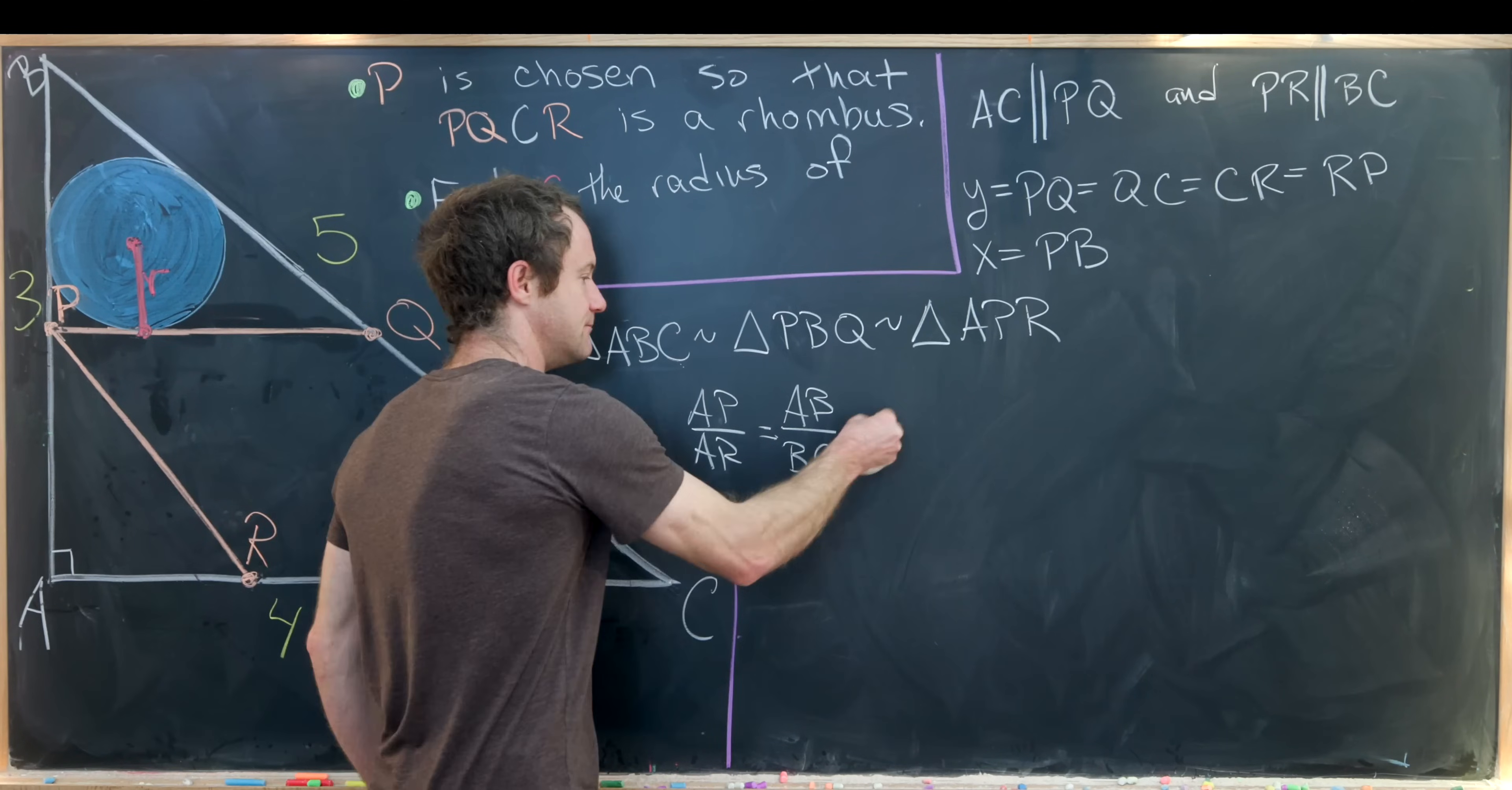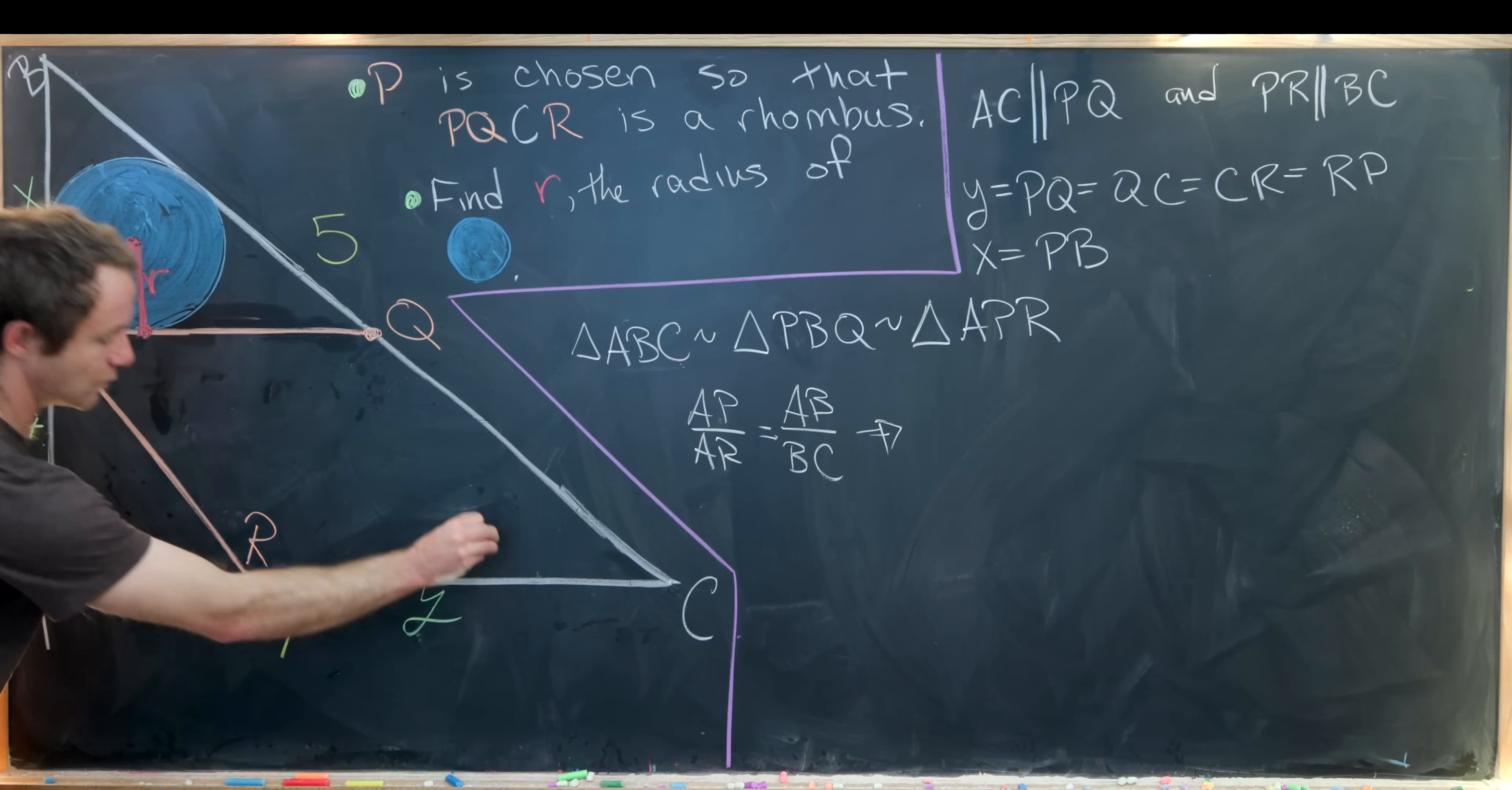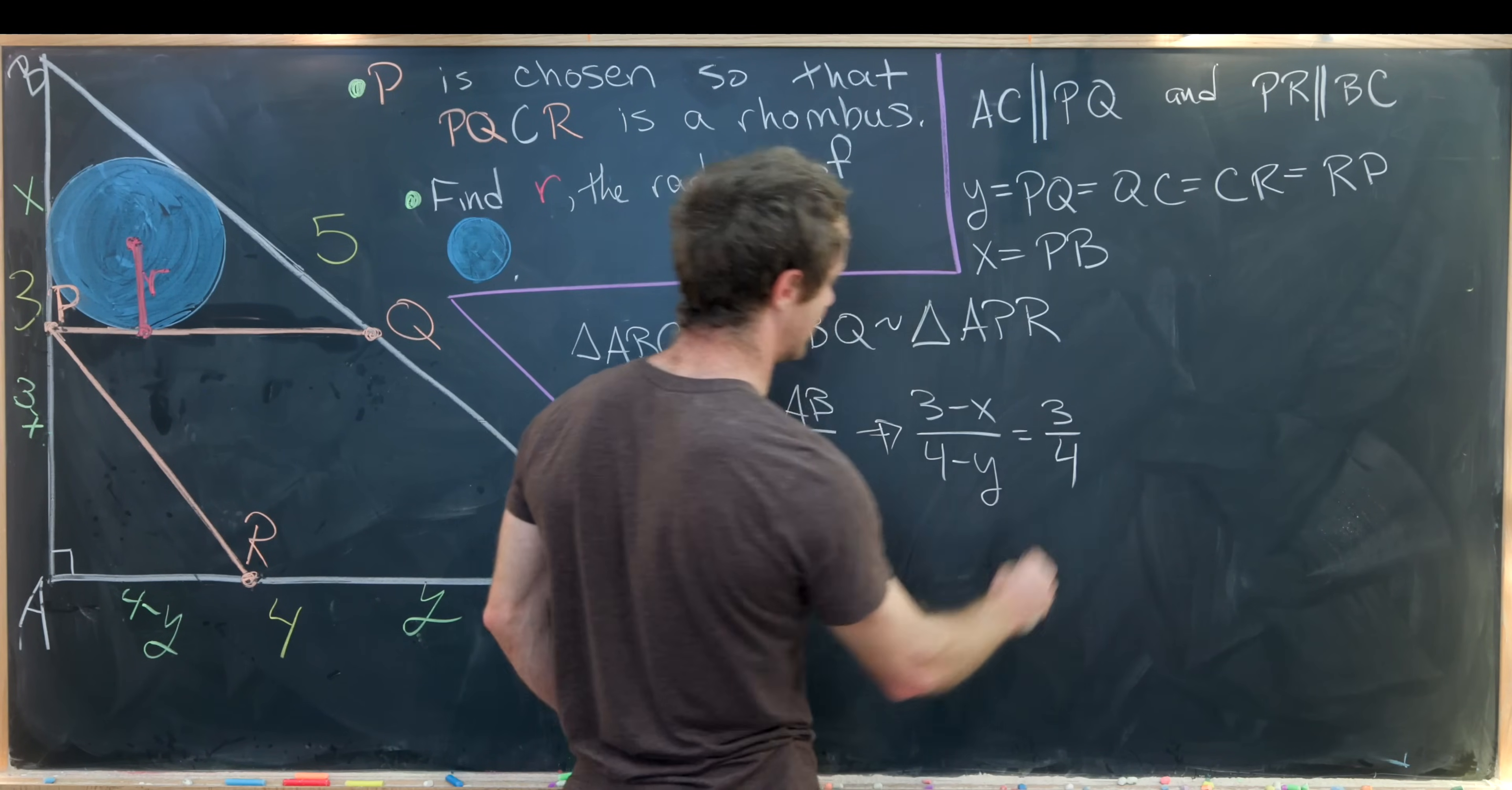Now let's measure each of these. We know that this guy up here is X, so that means this guy right here is 3 minus X. Furthermore, we know that RC is Y, which means this here is 4 minus Y, because the entire side length is 4. So that gives us a proportion of (3 minus X) over (4 minus Y) is the same thing as 3 over 4.